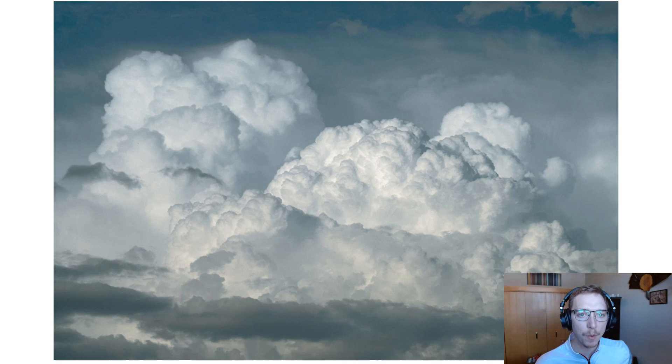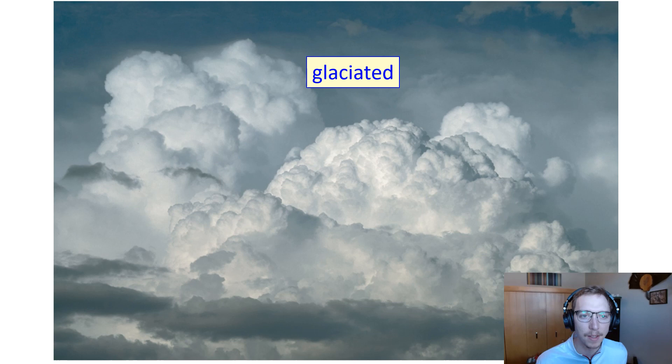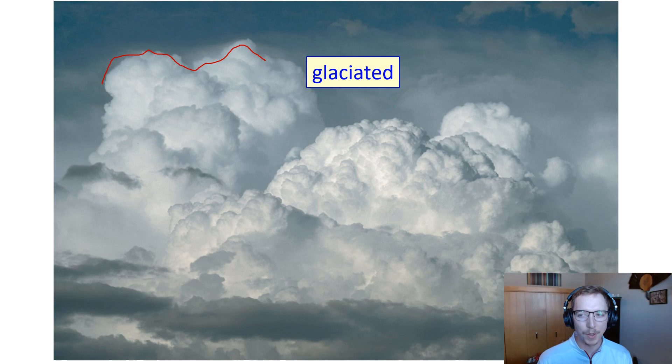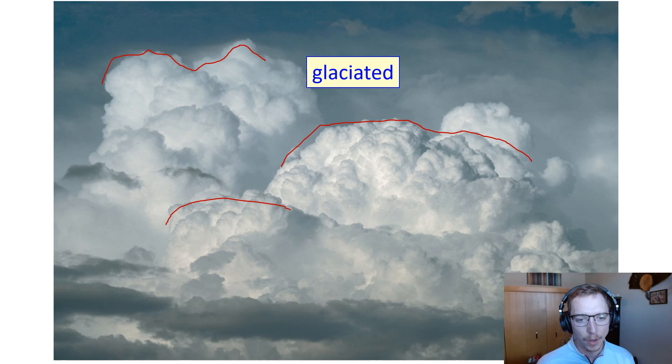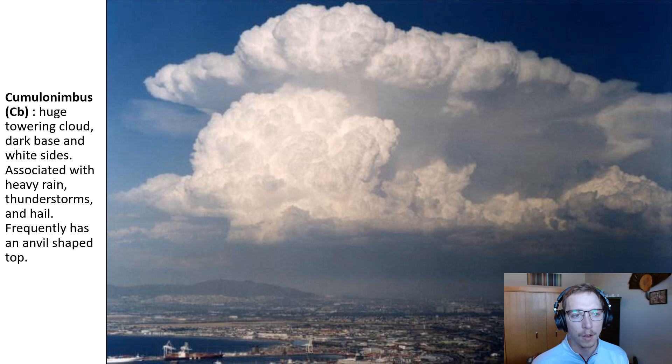There's a phenomenon called glaciation or glaciated clouds — notice the wispiness in the upper portions of cumulonimbus clouds. The transformation of cloud particles from super-cooled water drops to ice is described as having a glaciated upper portion within the cloud. You don't notice it in the lower portions, but you definitely notice that wispiness above the cumulonimbus cloud.